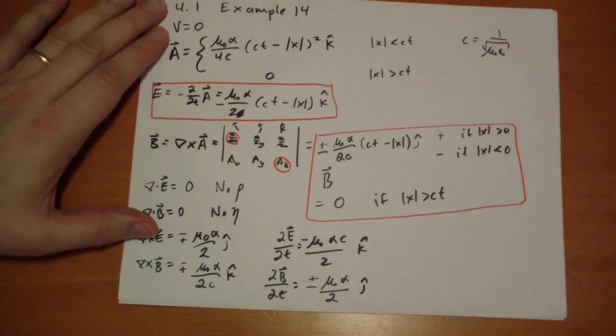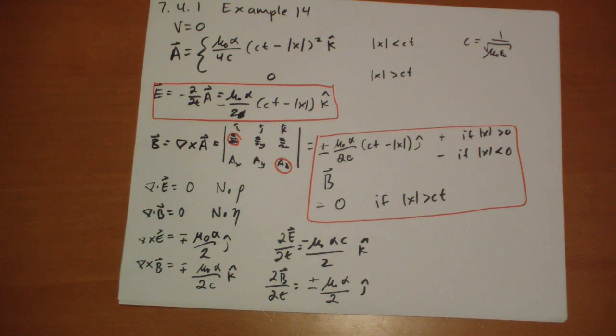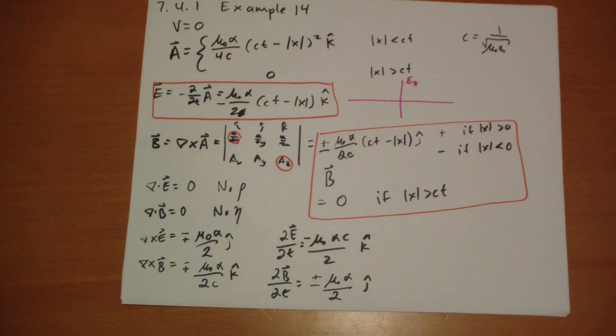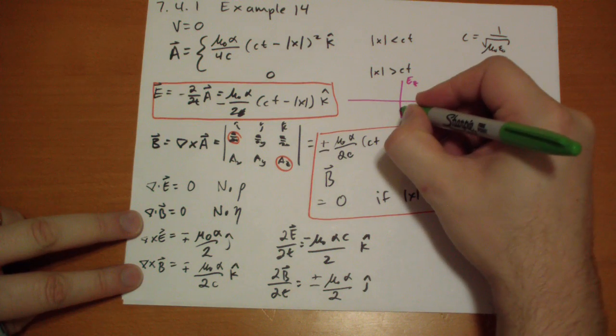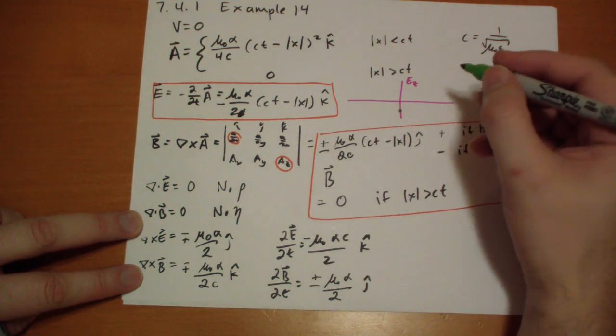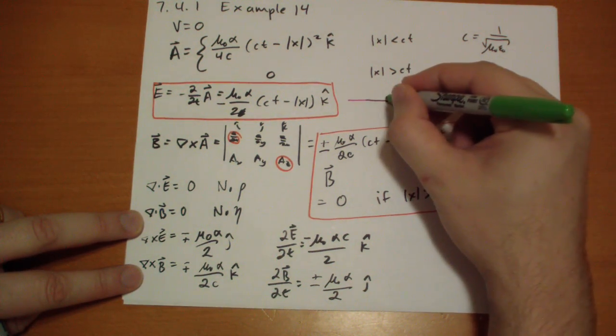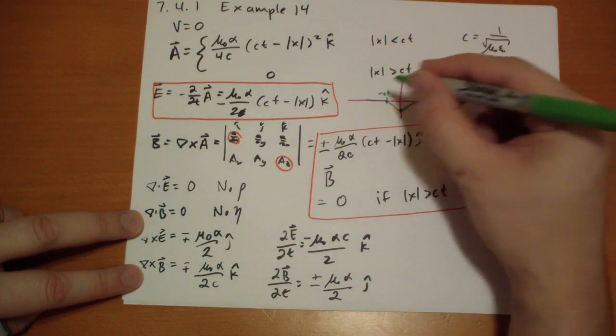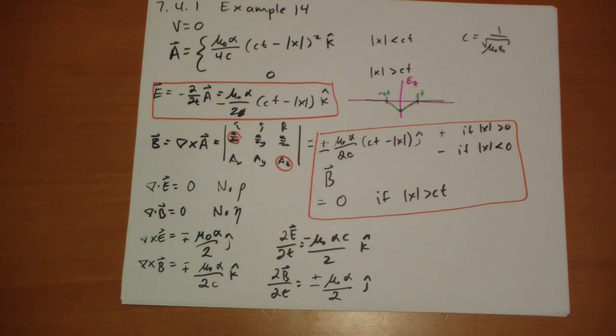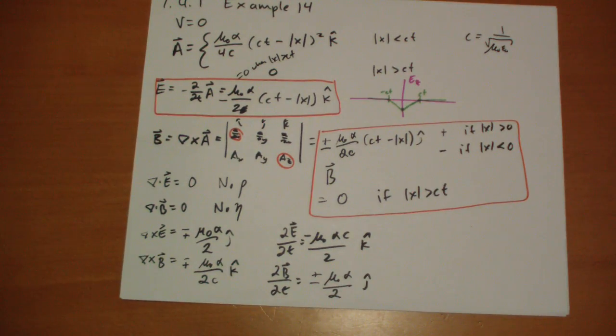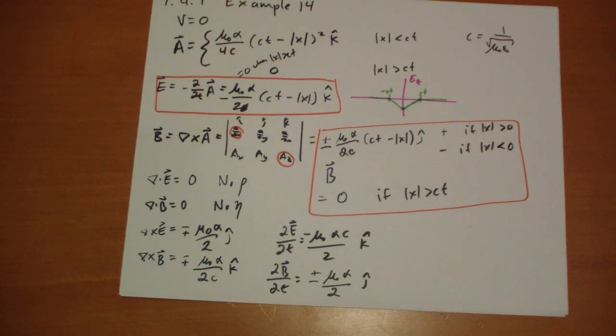So E, the Z component of E: when X is zero, we get a negative value down here. Then this increases until we get to CT, and then it's flat. This is equal to zero when X is greater than CT, because it's the time derivative of A and A is equal to zero when that happens.